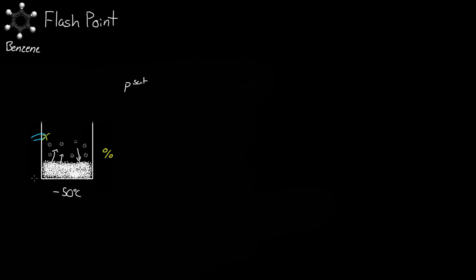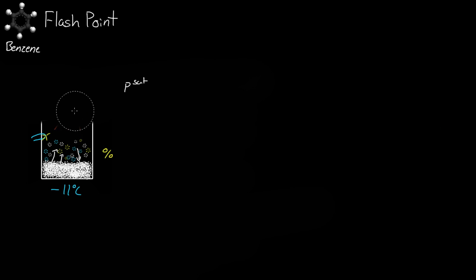So what we have to do is increase the temperature — say to negative 25 degrees Celsius. If we increase the temperature, we increase the number of molecules out here. We try to spark it again and see if there's a fire — still no fire. So we increase the temperature again to maybe negative 11 degrees Celsius. We let it equilibrate, wait for just as many molecules to be leaving as coming back in, and we spark it. We notice there's a flash — a flash of heat, a flash of fire — and it doesn't last very long. The reason it doesn't last very long is because there's not enough benzene molecules leaving the liquid to replenish the fuel.